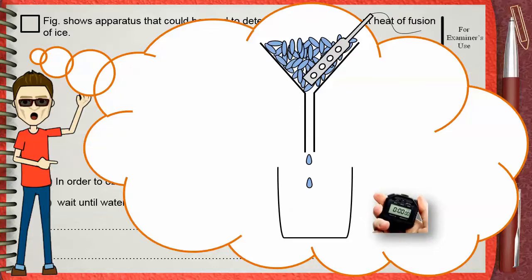Ice will melt and water will be collected in the beaker. After 3 minutes or 4 minutes, or the time you have defined before, stop the stopwatch and immediately remove the funnel.